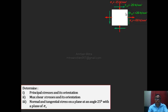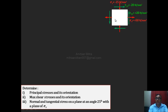The next step: find the X coordinate and Y coordinate. They ask three questions: principal stresses and their orientation, maximum shear stress and its orientation, and normal and tangential stresses on a plane at an angle of 25 degrees with the plane of sigma X. The sigma X plane is the vertical plane, so we draw a plane making 25 degrees with the vertical plane, and find sigma N and sigma T at that angle.